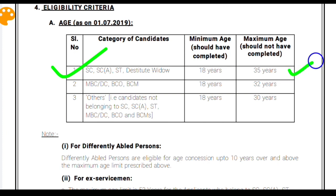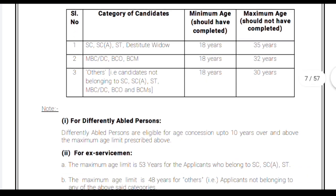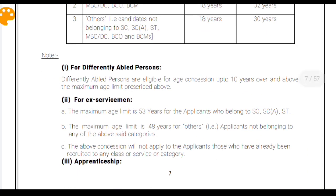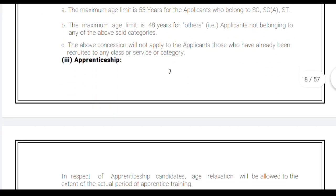About the age criteria, the age limitation is from 18 years to 35 years if you belong to the unreserved or General category. If you belong to a reserved category like SC or ST, you will get five years age relaxation. If you belong to the Physically Challenged category, you will get 10 years age relaxation.